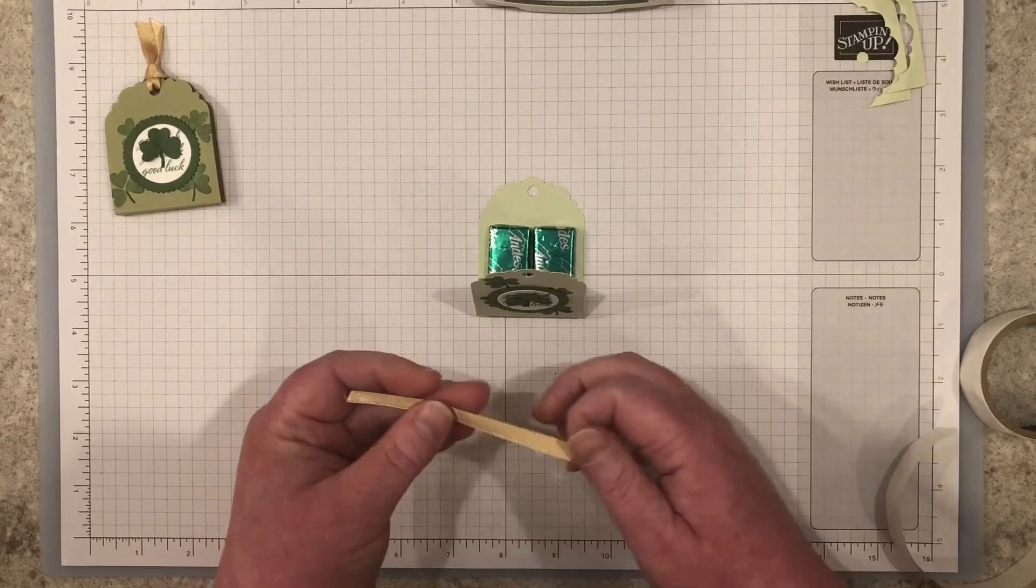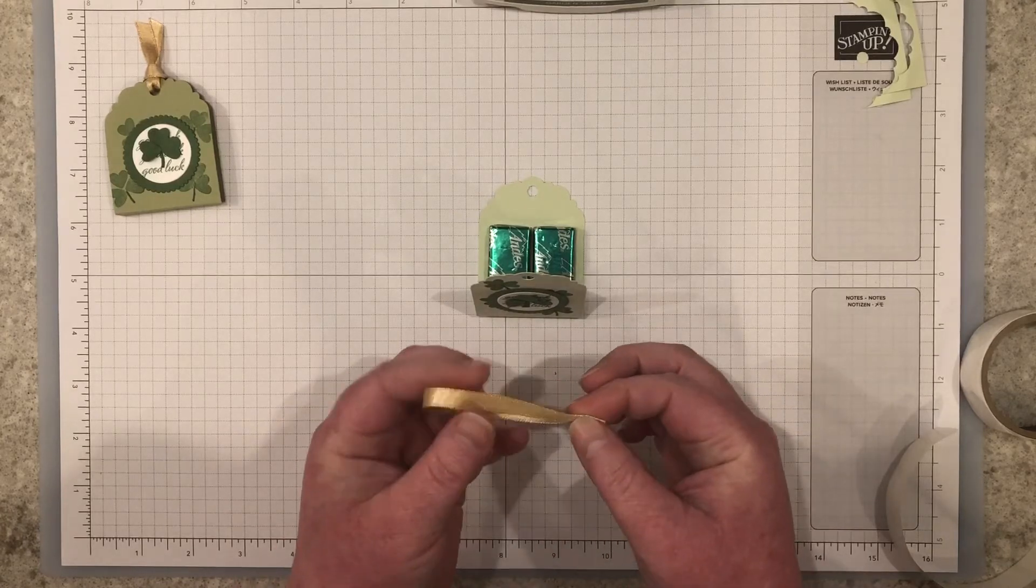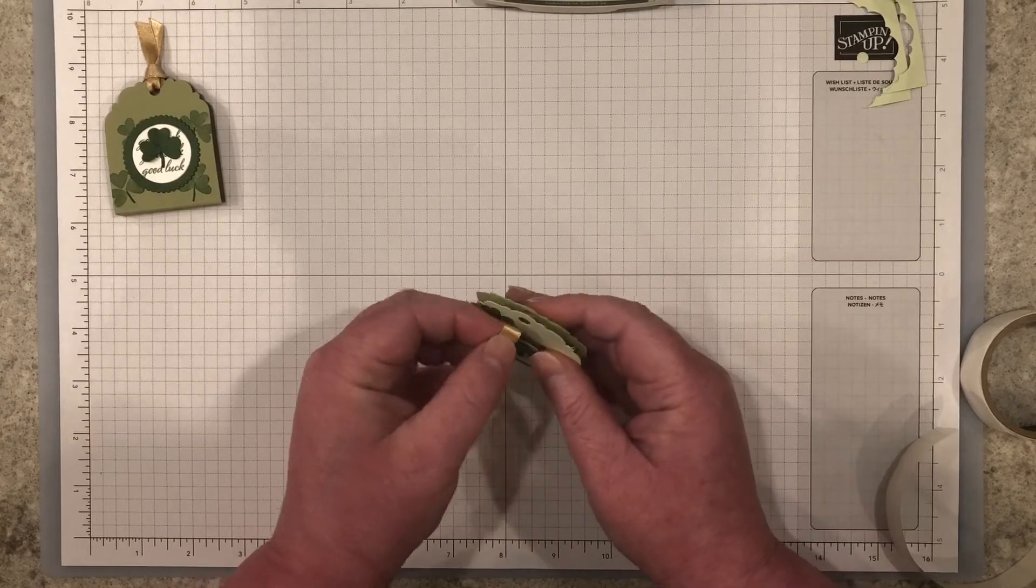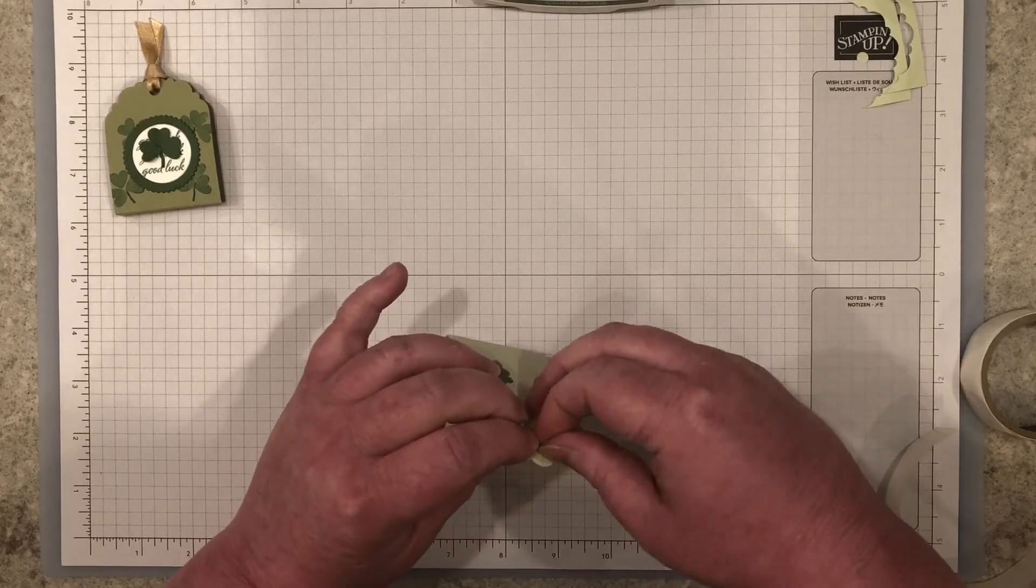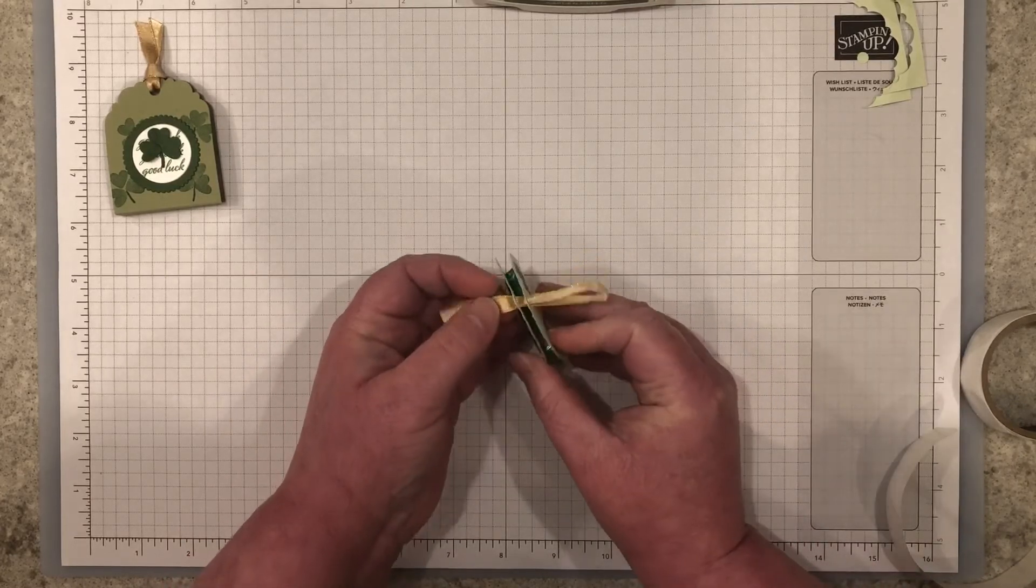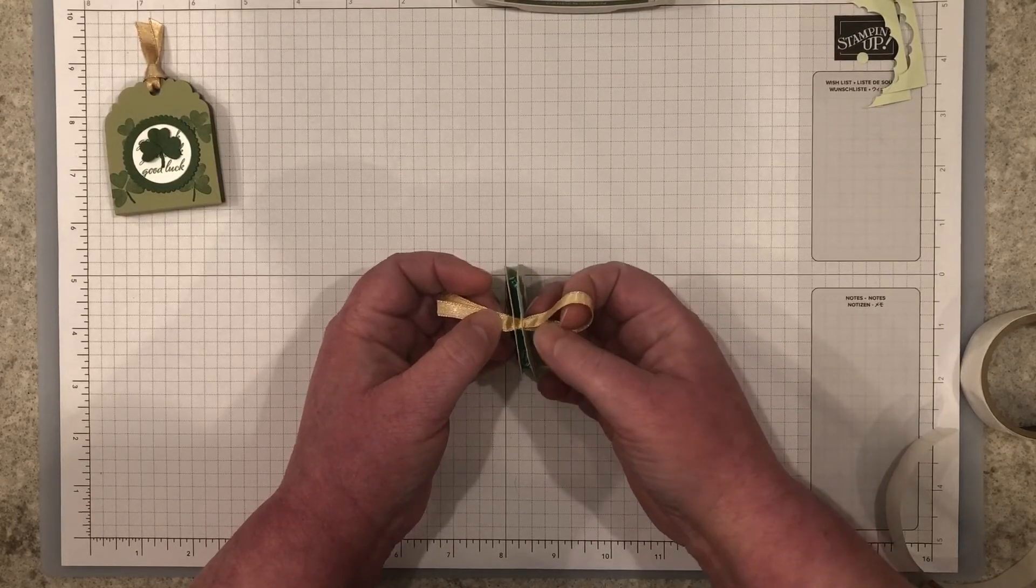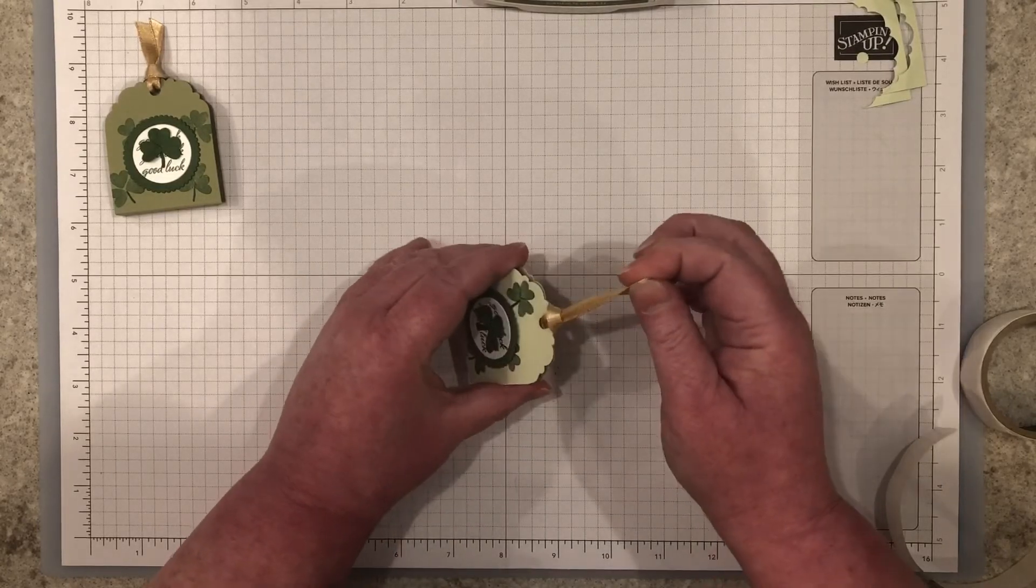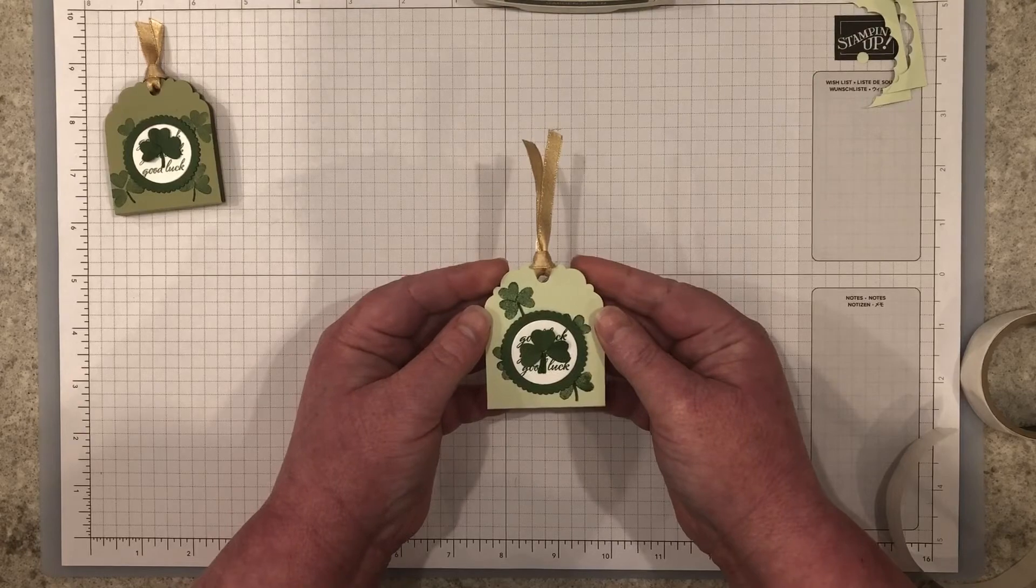Cut a piece of gold shimmer ribbon about six inches long, fold it in half. Close up your treat holder with the folded end of the ribbon. Push the ribbon from the front of the treat holder through the hole and out the back of the treat holder base. Push about halfway through. Then open up the loop that you created with the fold of the ribbon and the back of the treat holder. Push the ends of the ribbon through the hole and pull tight. This is called a lark's head knot or also a half hitch knot.